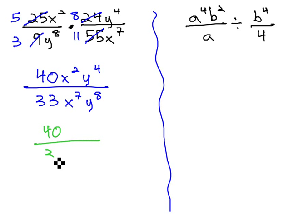We still have the 40 over 33, and then we subtract the exponents on x, 2 minus 7, to get negative 5. This means the x to the 5th goes in the denominator. Also, subtracting the exponents on y, 4 minus 8, gives us negative 4. So, the y to the 4th goes in the denominator as well.